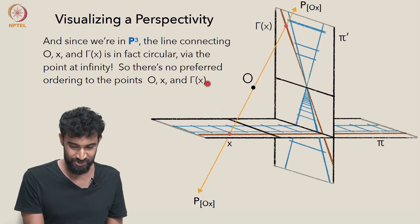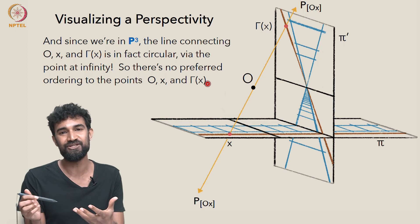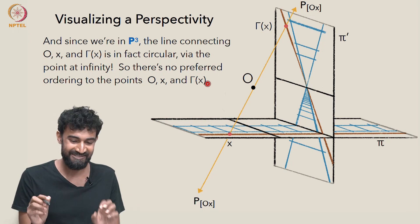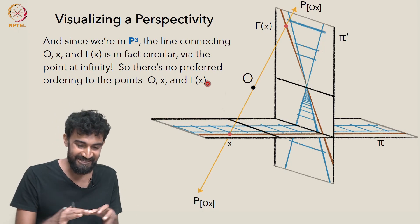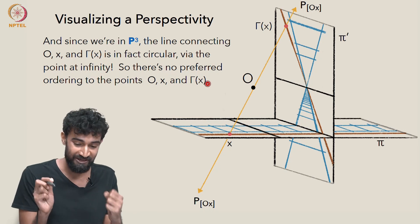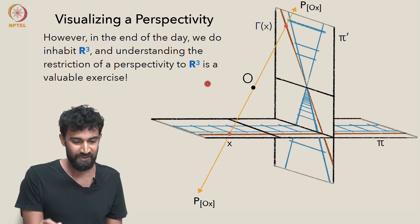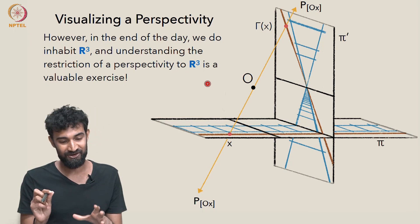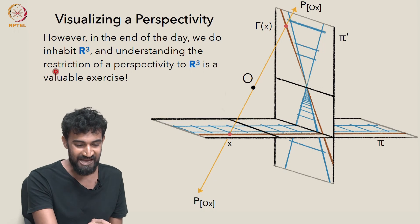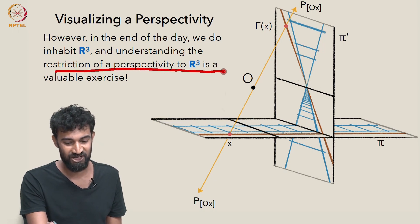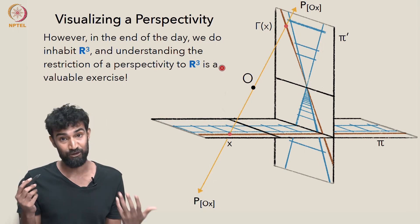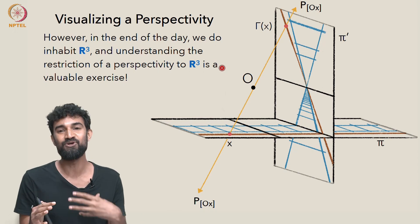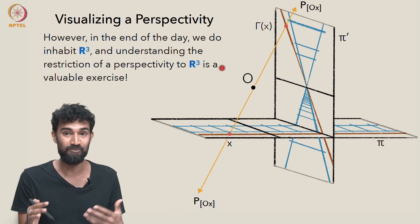So to a projective geometer, all these interpretations are really a red herring. They're not telling us anything. They're kind of misleading us in a different direction from the actual fundamental nature of this map. But at the same time, at the end of the day, we do inhabit R3. And understanding the restriction of a perspectivity to R3 is still a very valuable exercise. So it's sometimes good to put on both hats and see it from both perspectives.